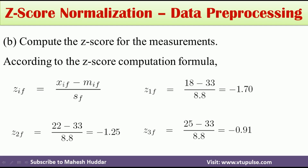Similarly, you can calculate the z-score for each and every remaining value. In this video I have explained what is normalization and what is z-score normalization. Z-score normalization is specifically used for removing outliers. I hope this video will help you with your data mining project. If you like the video, please like, share, subscribe, and press the bell icon for regular updates.